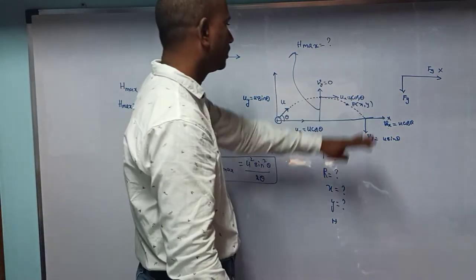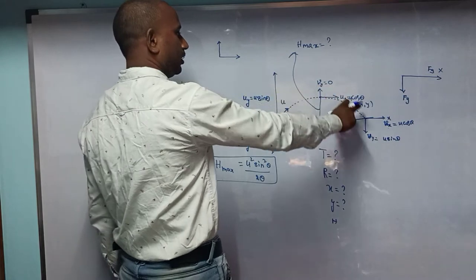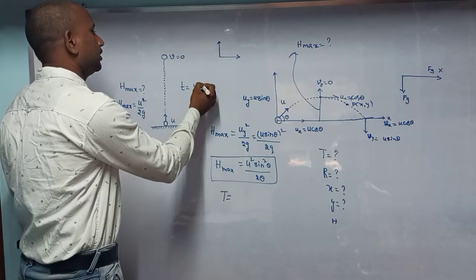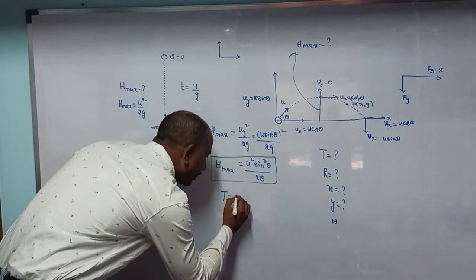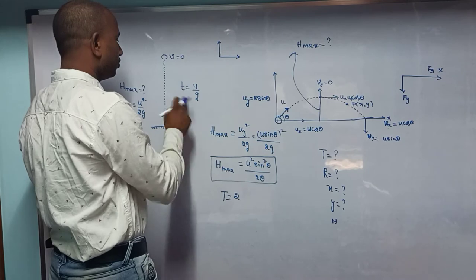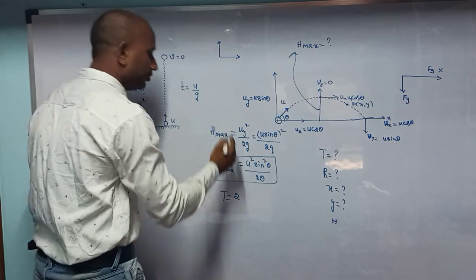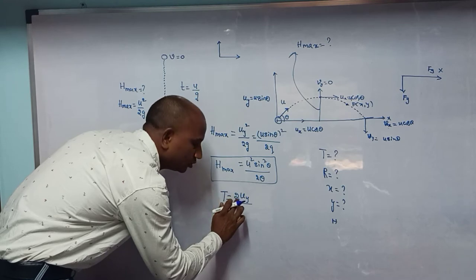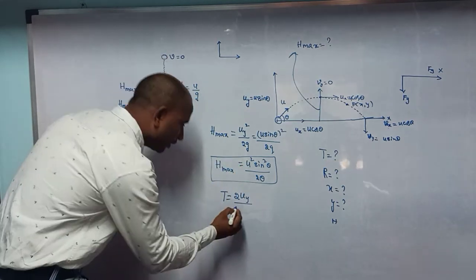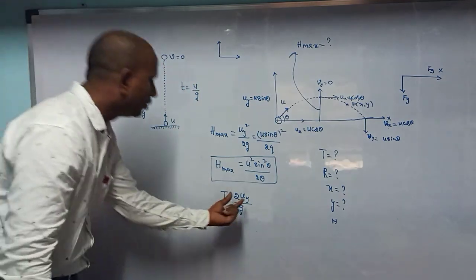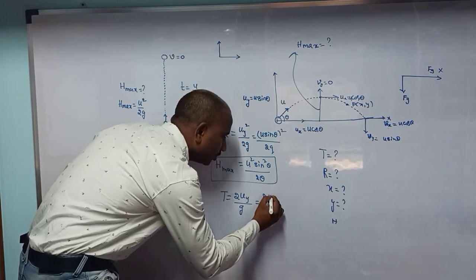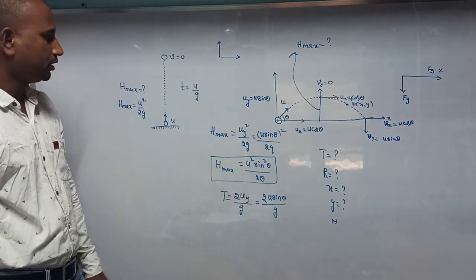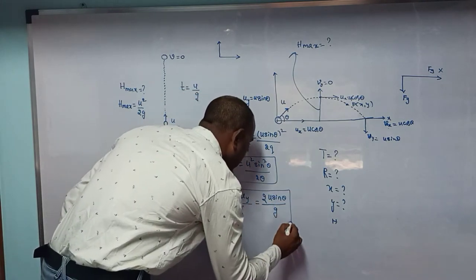Next, we find the time of flight — total time taken by the body in the gravitational field. The time of ascent is u by g, so time of flight T equals 2u by g. Using the vertical component, T equals 2uy divided by g, and substituting uy equals u sin theta gives T equals 2u sin theta divided by g.